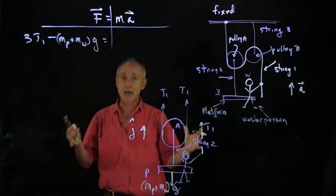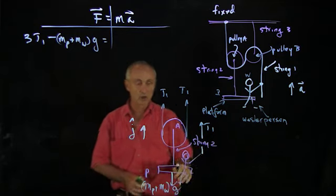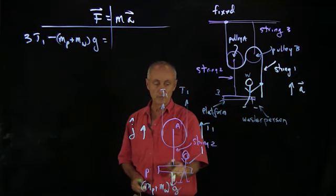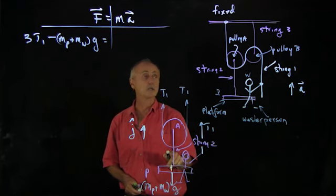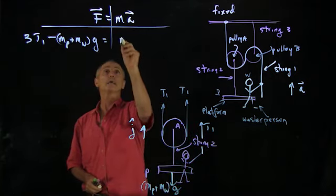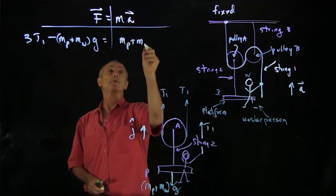Now, what is the mass that we have to consider? Again, what is the mass of our system? Well, the platform and the person. And we assume the pulley and string 2 were massless. So we have simply mp plus mw times a.